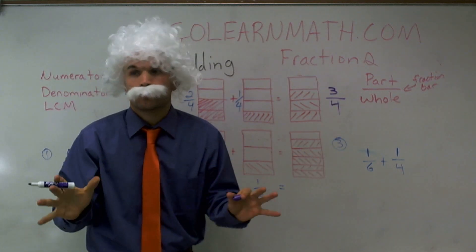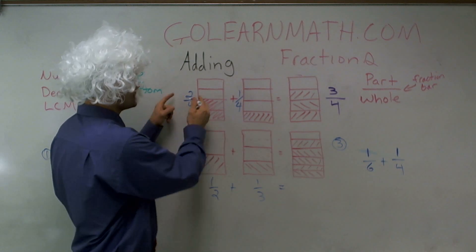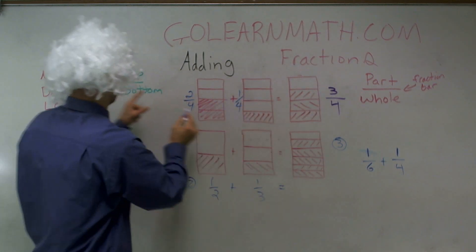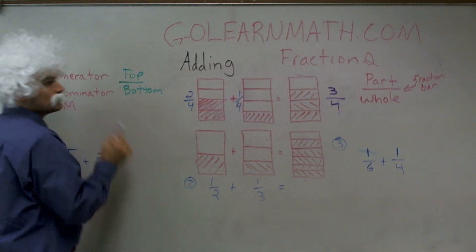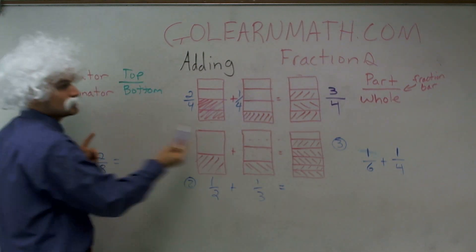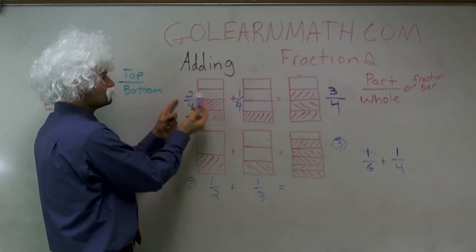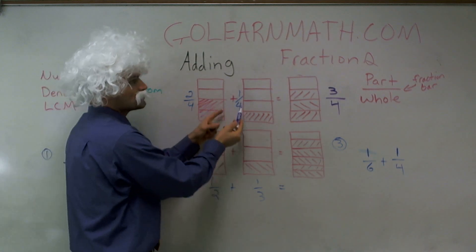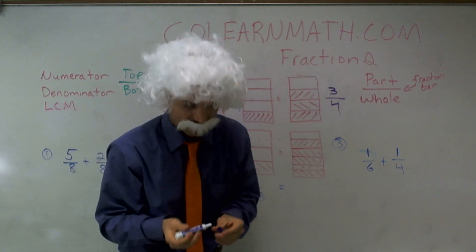The big misconception I don't want you guys to make is when you're adding fractions, you make sure you add the top number, which we call our numerator, and you keep your bottom number, which we call our denominator, the same. So two fourths plus one fourth equals three fourths.